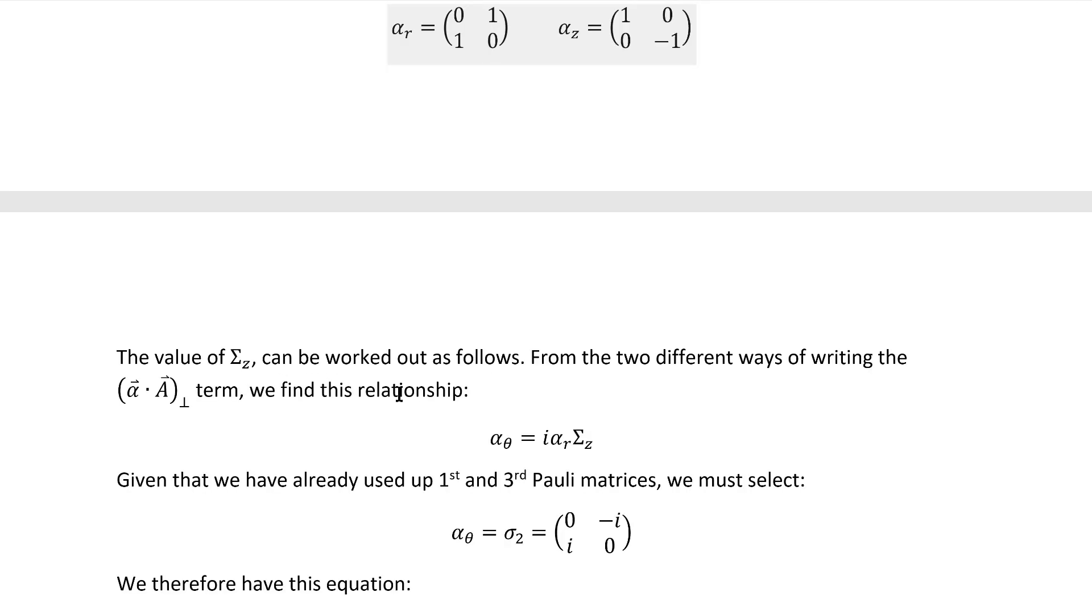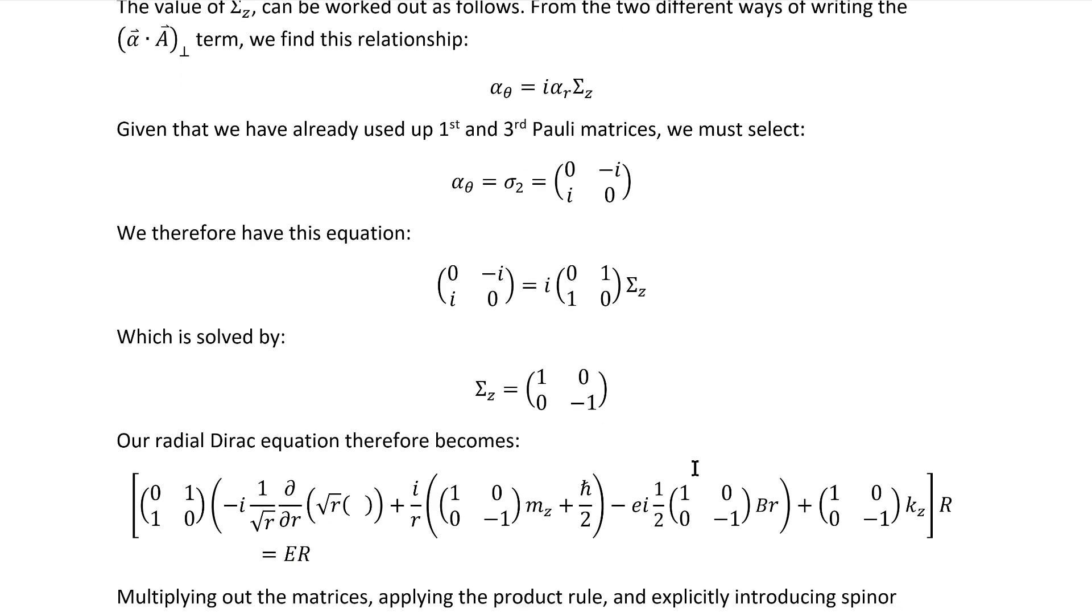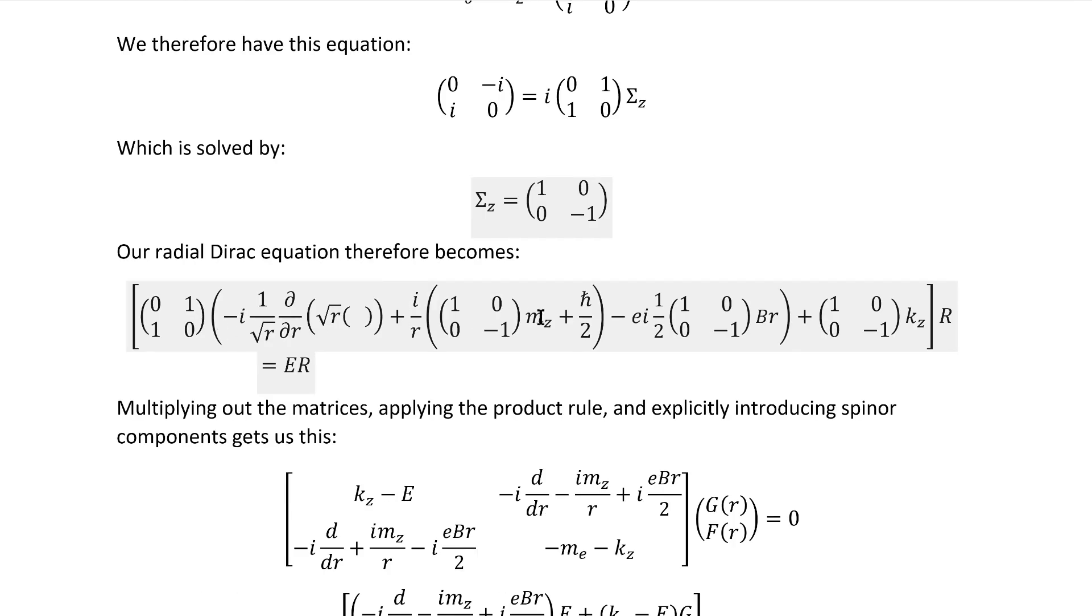The value of sigma z I worked out in the following way. From the two different ways of writing alpha dot A, we can extract this relationship. Given that we've already used up the first and third Pauli matrices, we must use sigma 2 for alpha theta. If we insert that and our selection for alpha r, we arrive at this equation, which is solved by, well, sigma 3. Inserting that then gets us this radial equation, and this is what we're actually going to start solving.